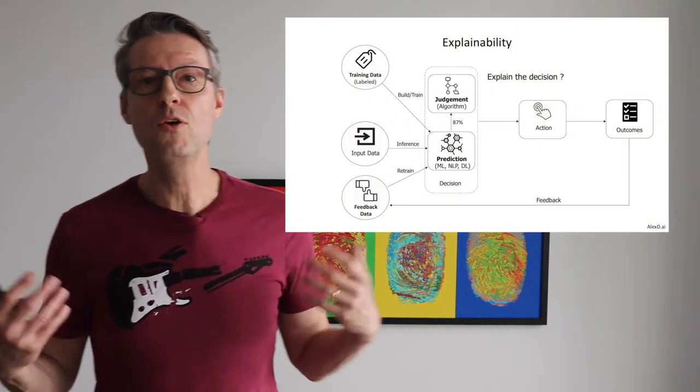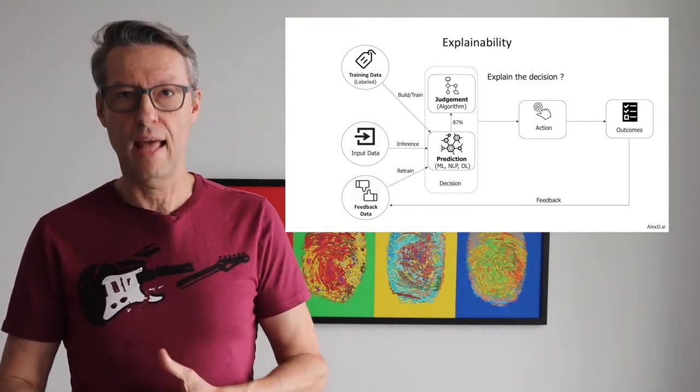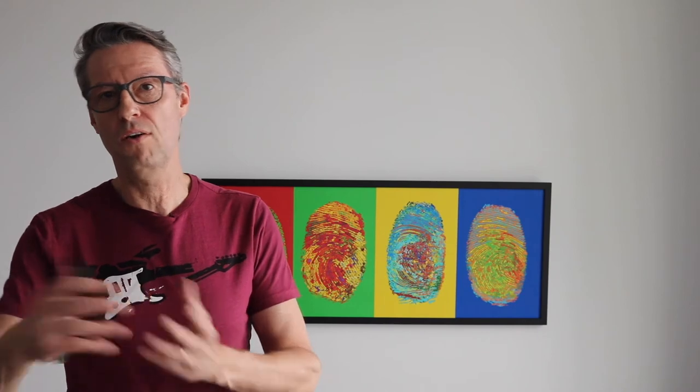Another important point here is explainability. If you are changing your process — if you are using AI to automate a decision — you will probably need to explain why a decision was made or not. If you need to explain, maybe sometimes you cannot use deep learning, because deep learning is a black box. It's a kind of algorithm where you really don't understand why it makes or doesn't make a decision.